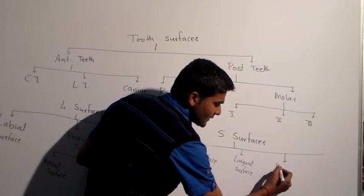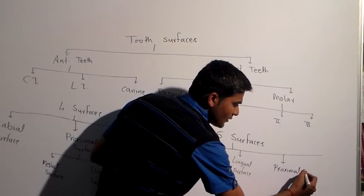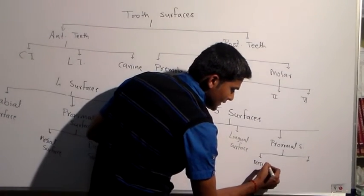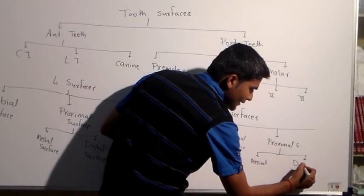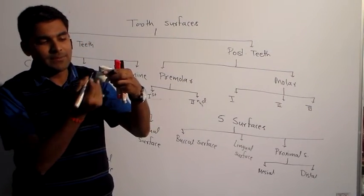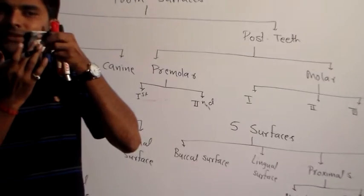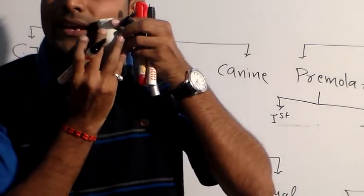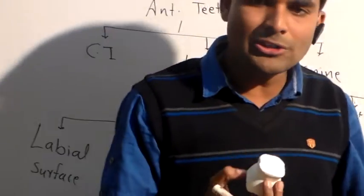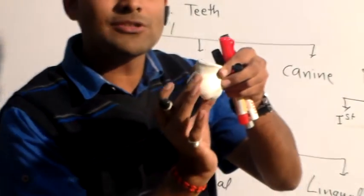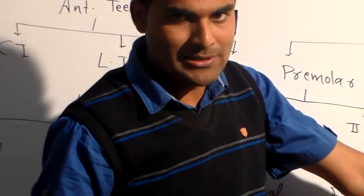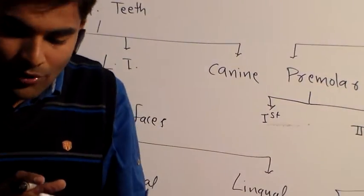For proximal surfaces in posterior teeth, we again have mesial and distal. The surface towards the midline is the mesial surface, and the surface away from the midline is the distal surface. They are called proximal surfaces because they are present in proximity to adjacent teeth. In addition, posterior teeth have an occlusal surface.